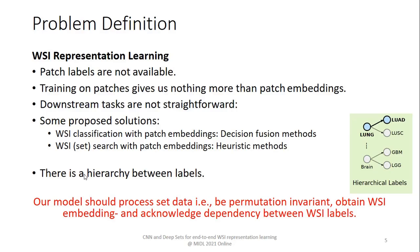Besides, training on patches gives us nothing more than patch embeddings. For some downstream tasks this is not enough. For example, it is not clear how to do WSI classification or WSI search given a set of embeddings per WSI. Also, there are some alternatives but they are suboptimal. There is also a hierarchy between labels, as each WSI has two labels — it is a multi-label problem with labels for its primary site and primary diagnosis. So we are looking for a method that can process set data, meaning the model should be permutation invariant and acknowledge the dependency between labels.